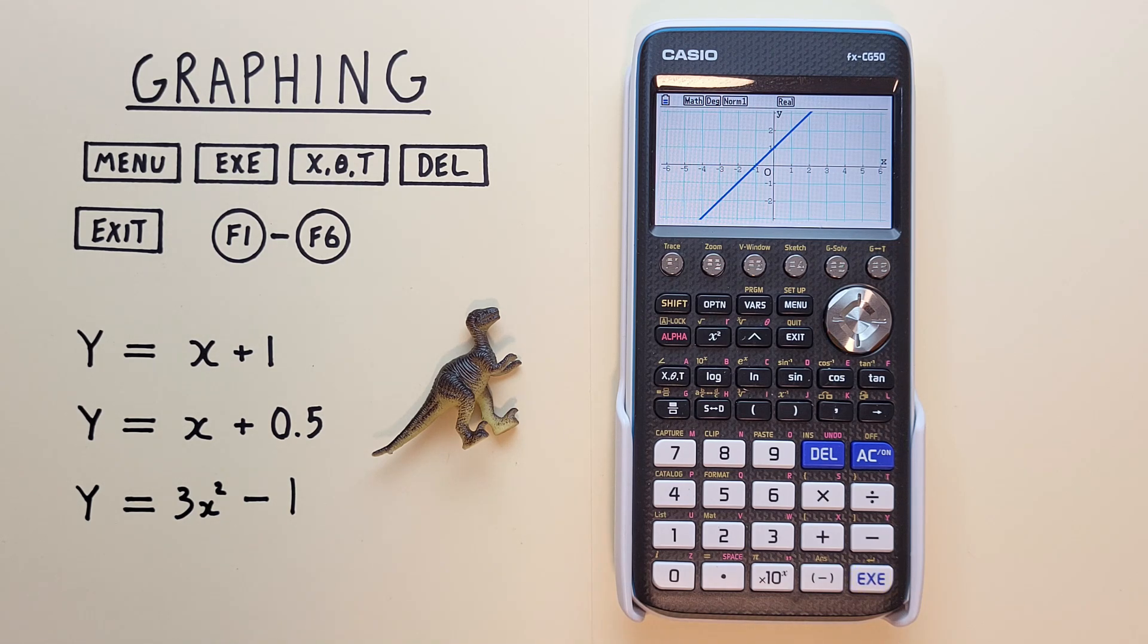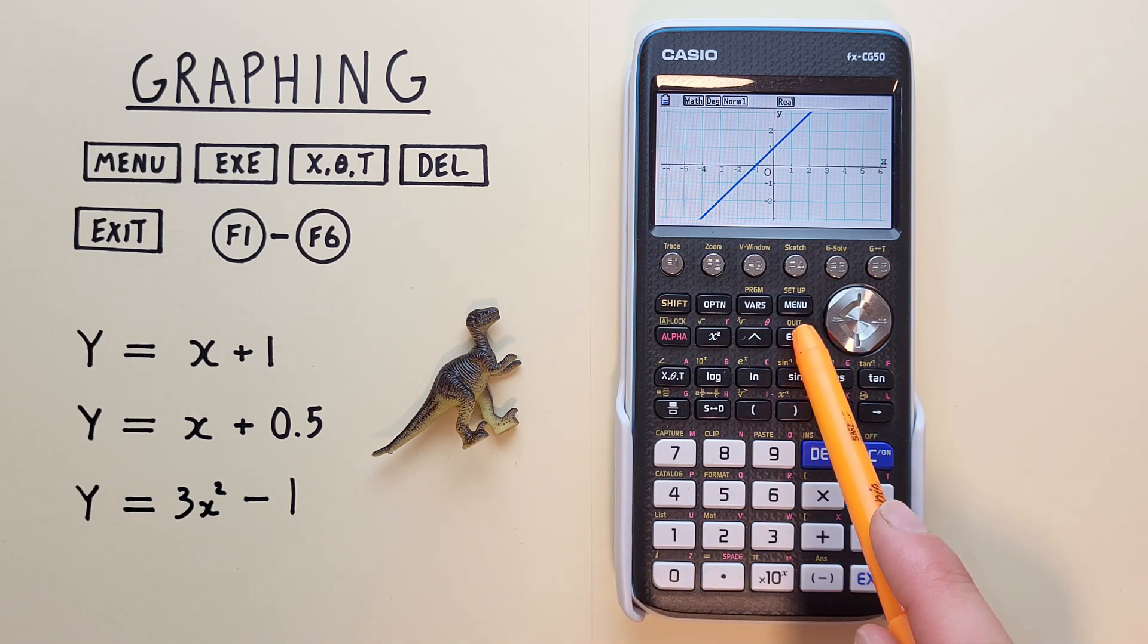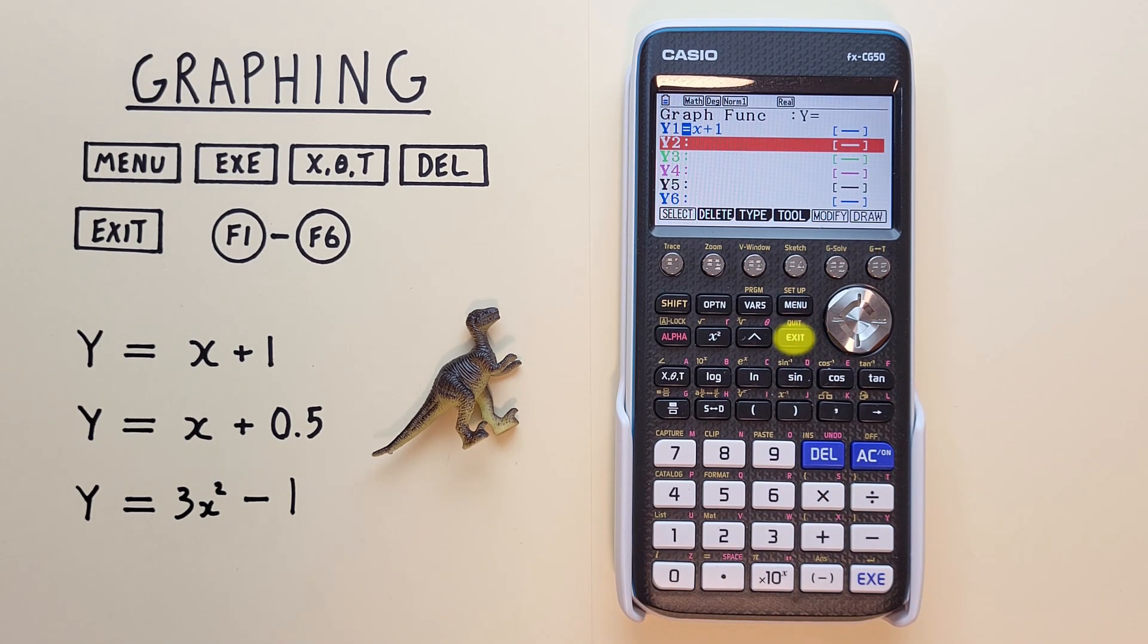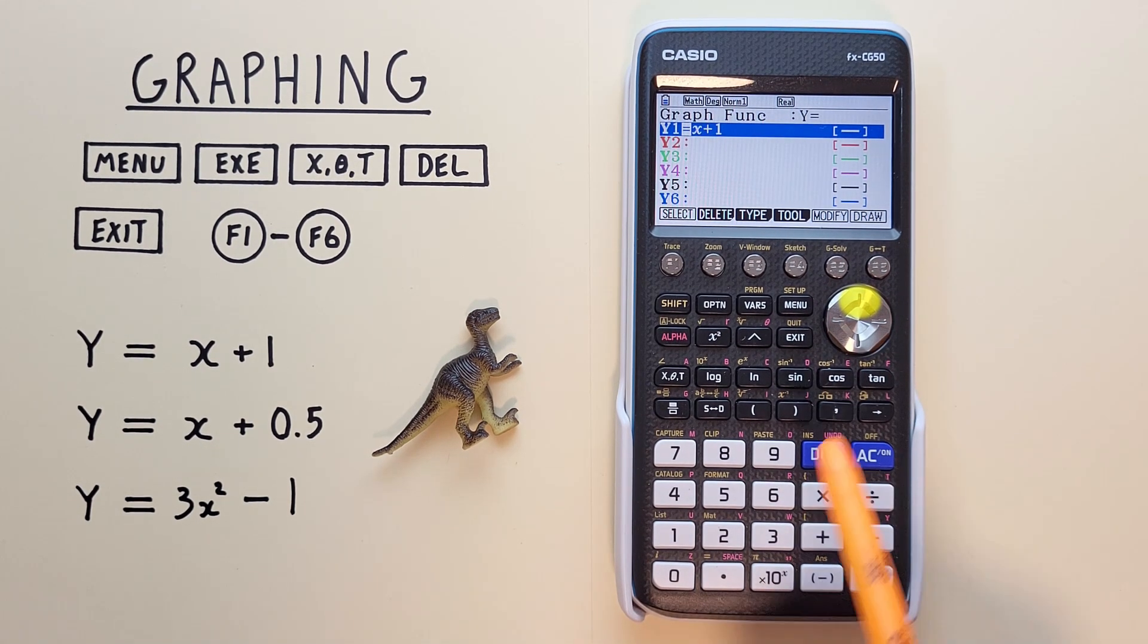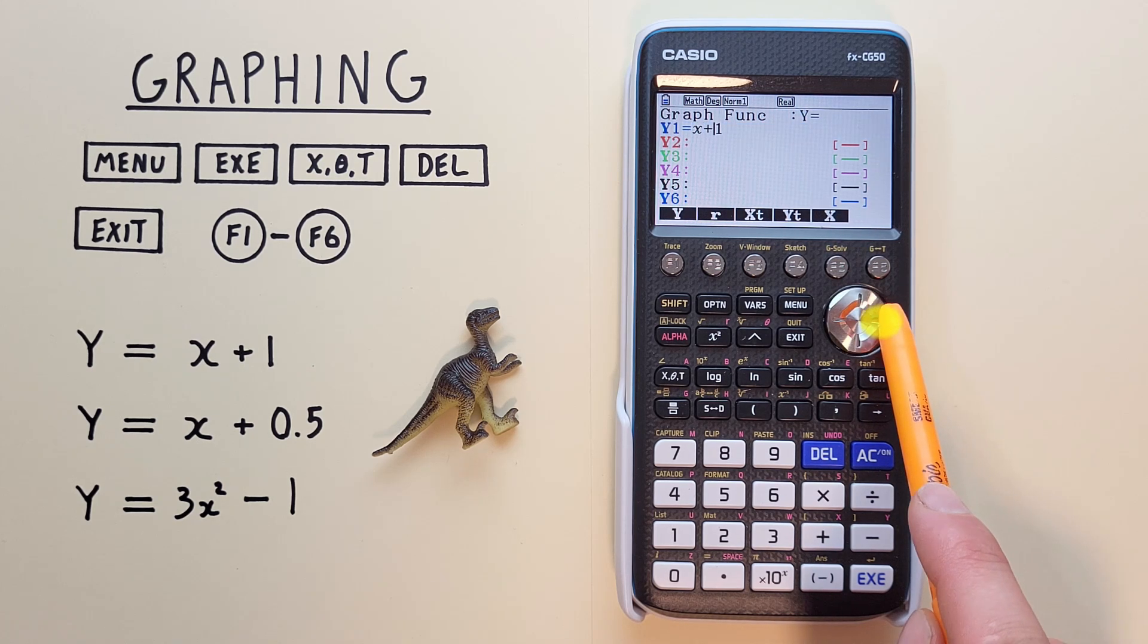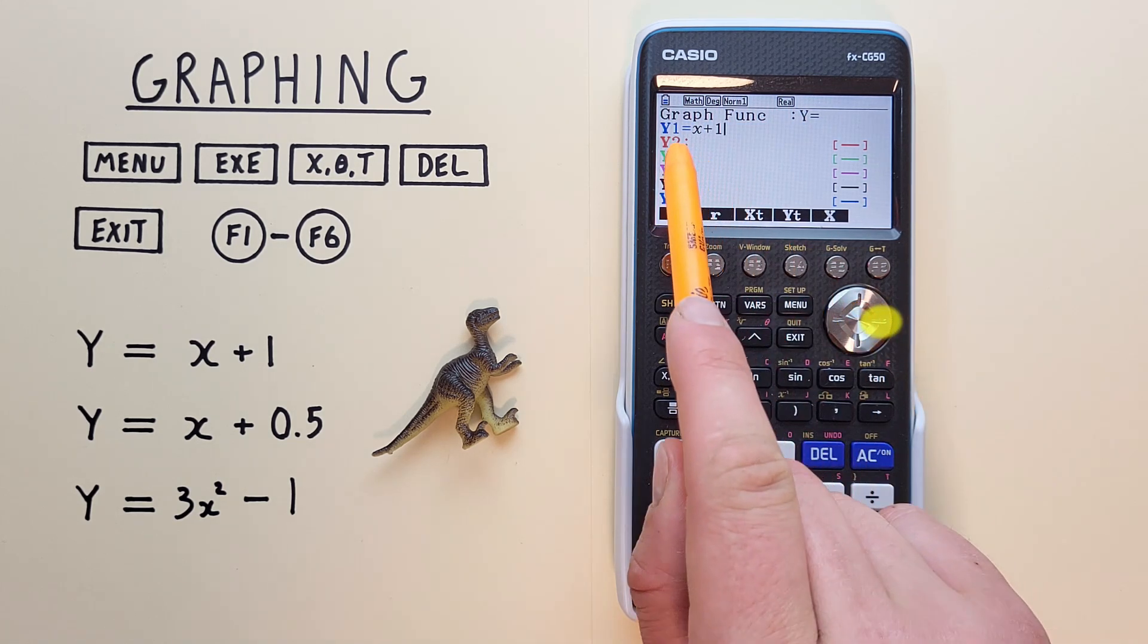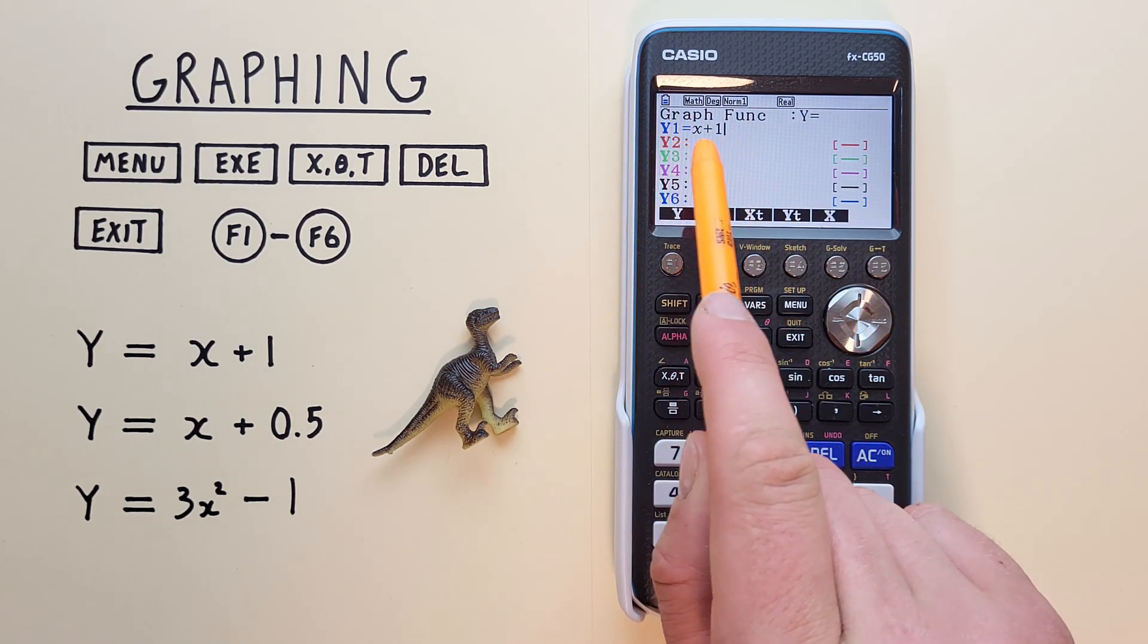To go back to our function entry menu, we can hit the exit key. There we go. If we want to edit our original function, we can just scroll up to it, and then use the right arrow, to move the cursor around, so that we can edit our function.